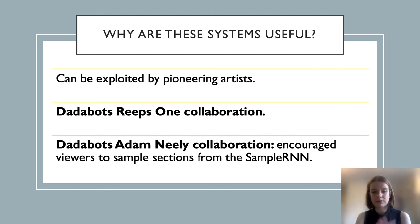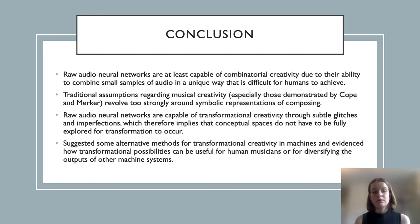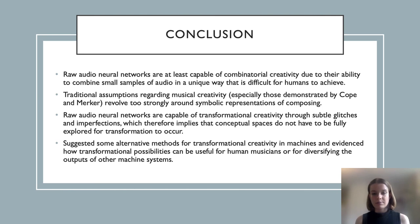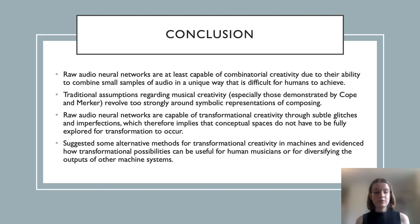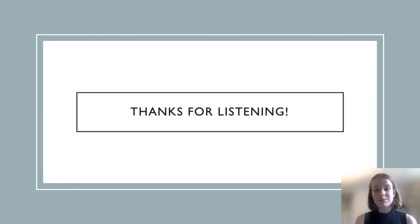To conclude: I have argued that raw audio neural networks are capable of combinatorial creativity. I have argued that traditional assumptions regarding musical creativity revolve too strongly around symbolic representations of composing. I have suggested that raw audio neural networks are capable of transformational creativity through subtle glitches and imperfections, which also implies that conceptual spaces do not have to be fully explored for transformation to occur. I have also suggested alternative methods for transformational creativity in machines and evidenced how transformational possibilities can be useful for human musicians or for diversifying the outputs of other machines. Thank you very much for listening to my presentation.